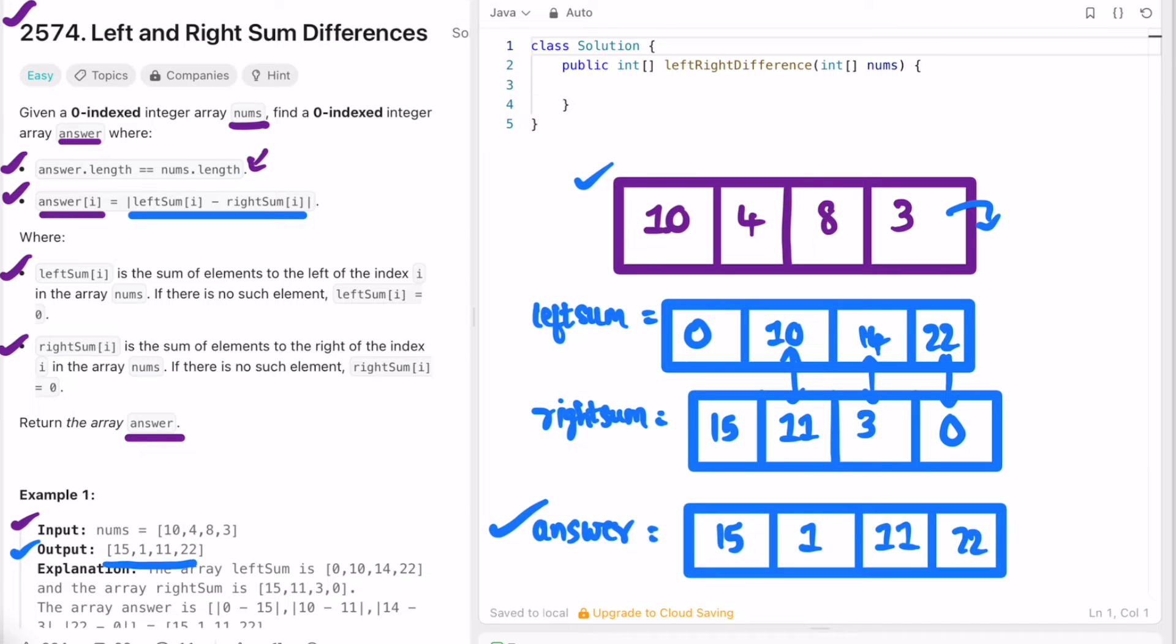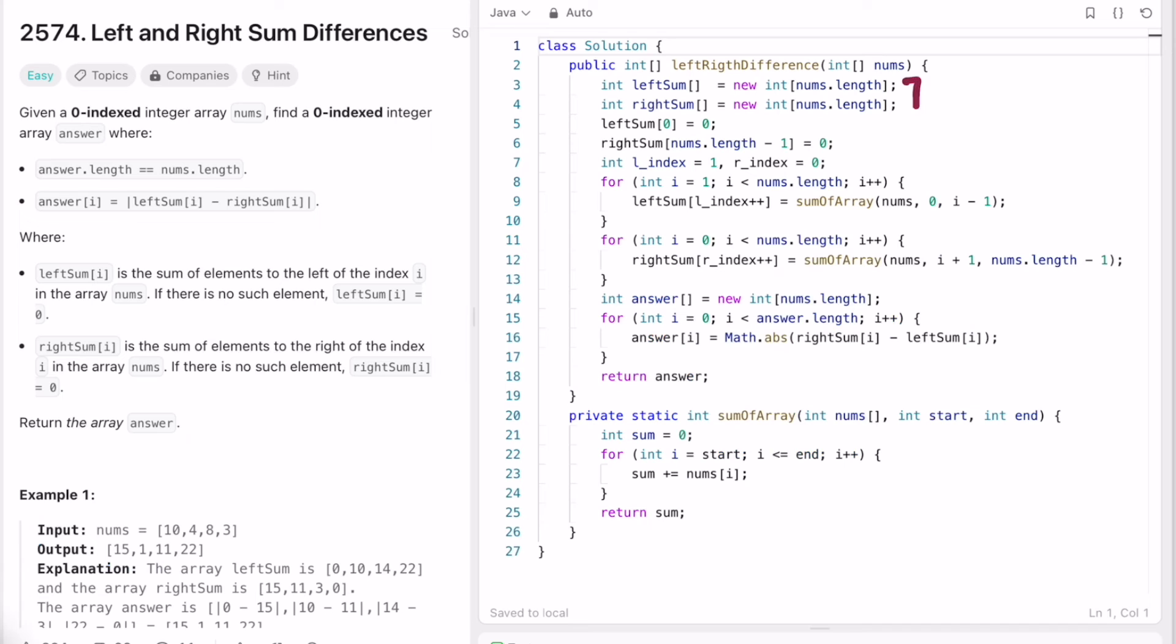So let's implement these steps in a Java program. I created the two arrays leftSum and rightSum. The starting element of leftSum will always be 0 because there won't be any elements to the left, and the last element inside rightSum array will be equal to 0. Now I'm taking two indices, leftIndex and rightIndex. leftIndex will start from 1 and rightIndex will start from 0 because we already created leftIndex at 0.